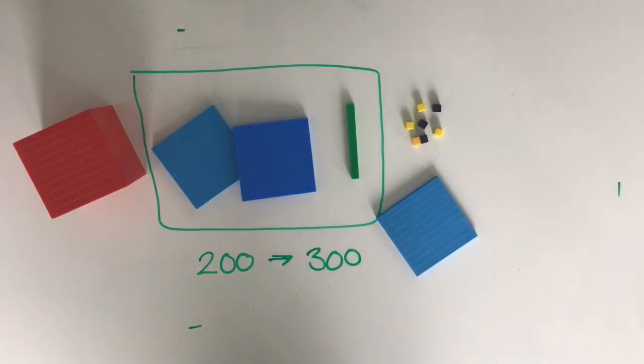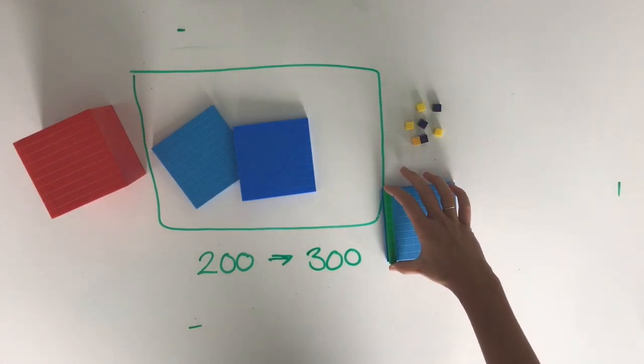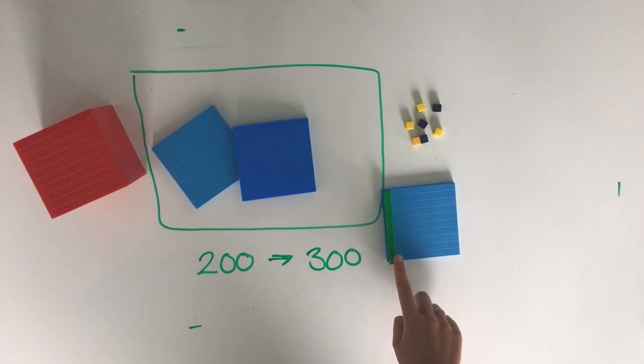Now it's time to compare our tens to our hundred. Remember, a really helpful strategy is to move our tens on top of the hundreds so we can see how much space it takes up. Here I can see we only have one ten. It's less than half of our hundred, so we know that we're going to round down.